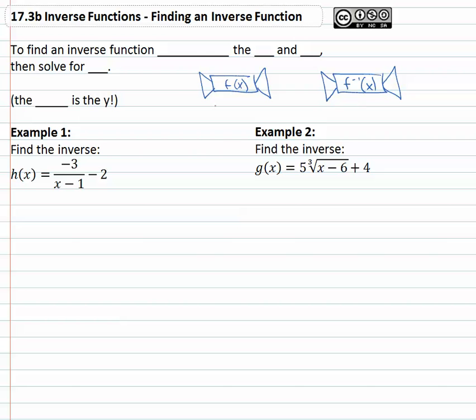And we know if we take some number like three and dump it in the function machine, we'll get something out, maybe a two. The idea of an inverse is if we plug that two into the inverse, we get out what went into the first function. We get out the three again.